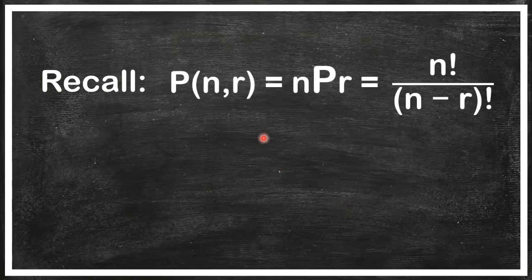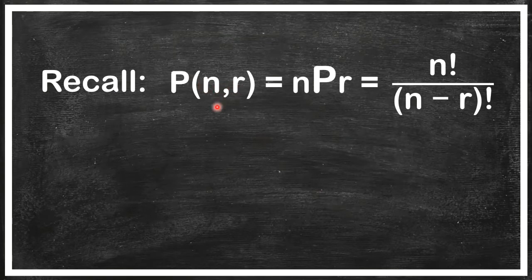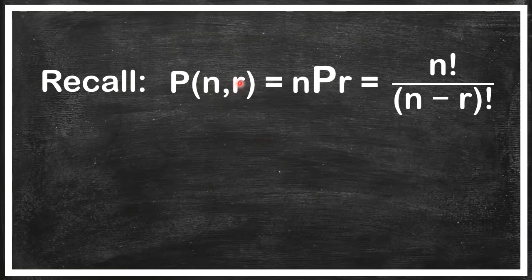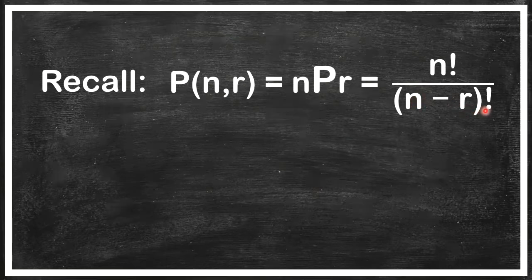But before we start, let's recall the permutation formula, the general formula. Where there are n different objects and from those n different objects, we're going to select r objects at a time. The formula is P(n,r), which can also be written as nPr. It's n factorial divided by (n-r) factorial.